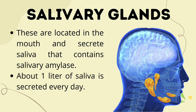About one liter of saliva is secreted every day. The salivary glands produce saliva which helps in digestion that begins in the mouth. Even when we just smell appetizing food, our salivary glands start secreting saliva — that's what we mean when we say someone is 'drooling.' That is the response of our salivary glands, preparing the mouth for digestion.